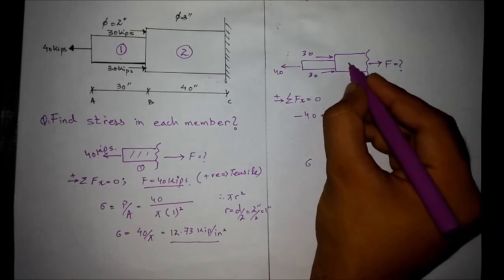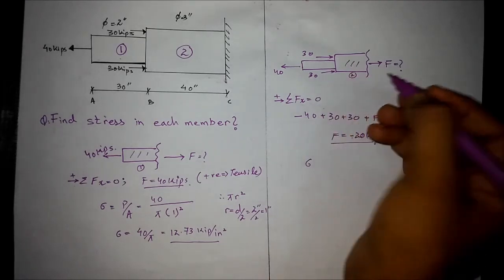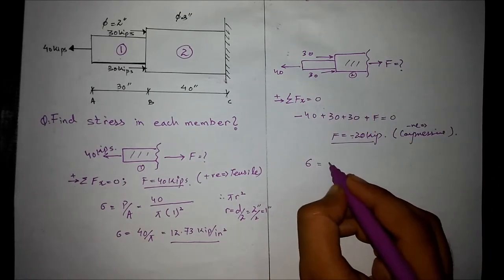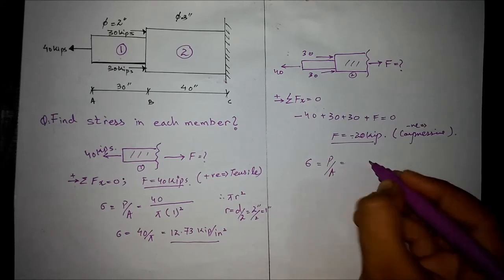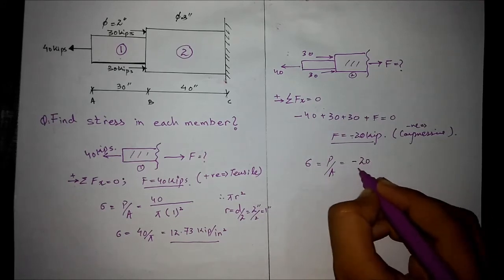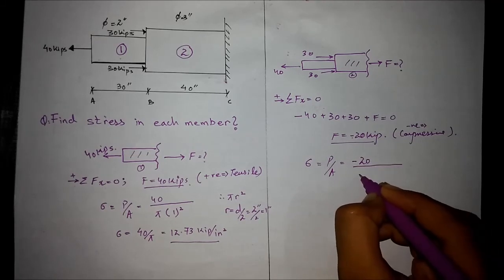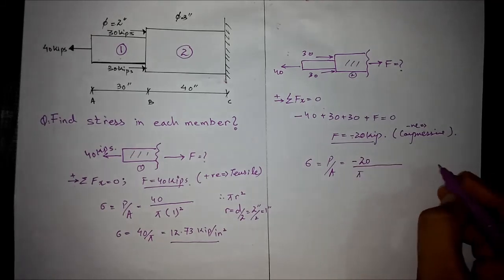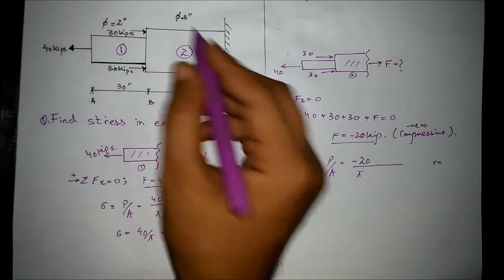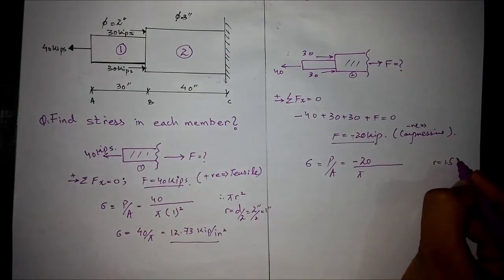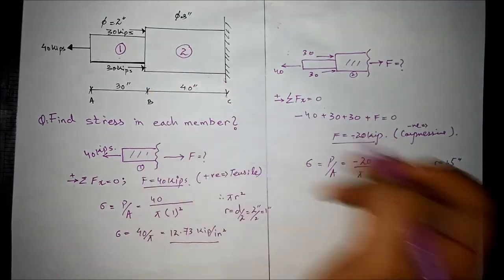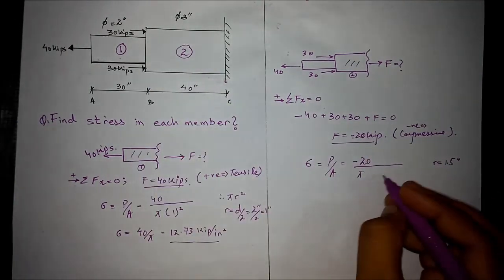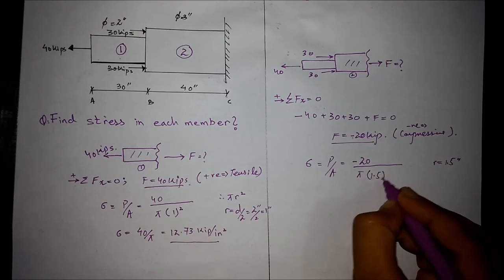The stress in member number 2 is found by taking the force in this member, that is minus 20 kips, divided by the area π r squared. The radius for this member is 1.5 inches, half of 3. The diameter is twice the radius, so if we halve the diameter, we get the radius, which is 1.5 inches.